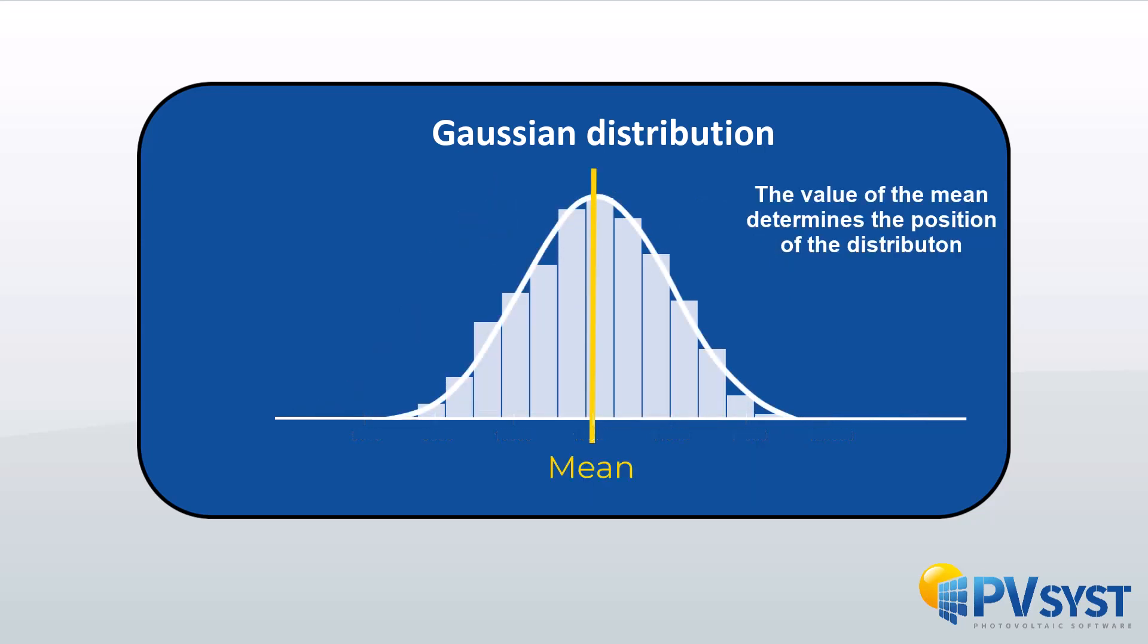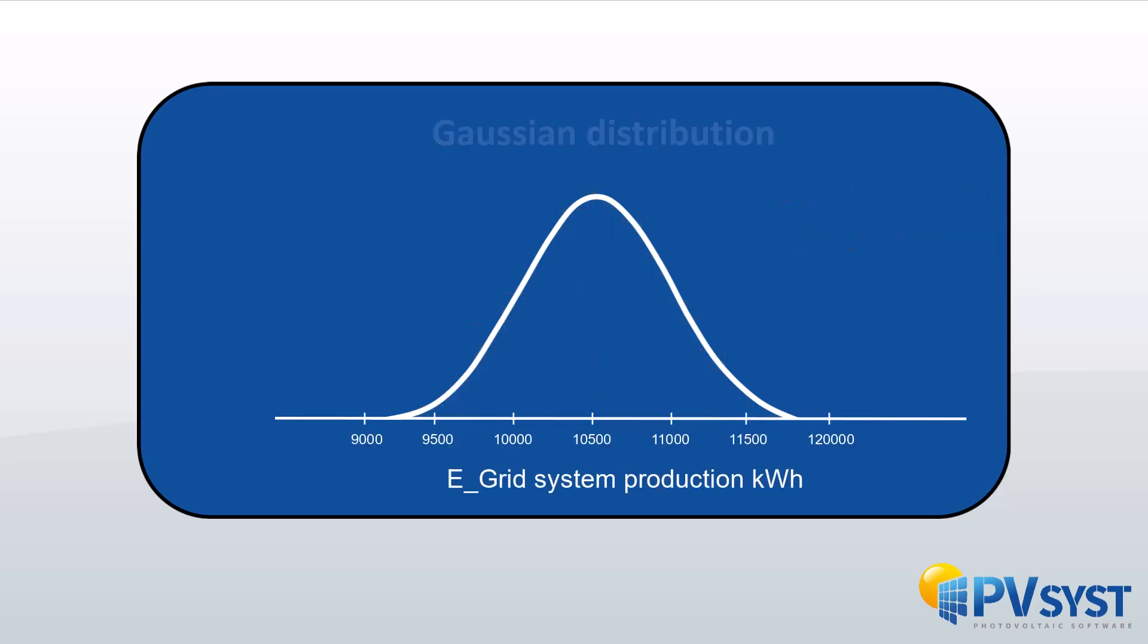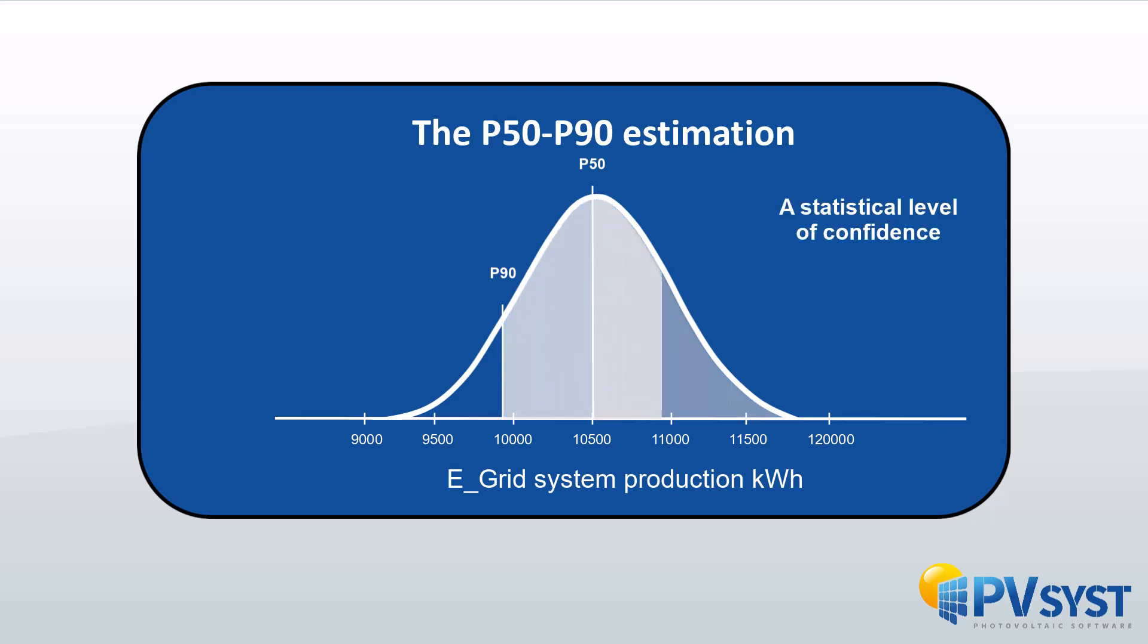The value of the mean determines the position of the normal distribution. The P50-P90 estimation thus represents a statistical level of confidence that the energy yield potential of a site and the predicted production from the energy grid system will be exceeded with a probability of 50% respectively 90%.